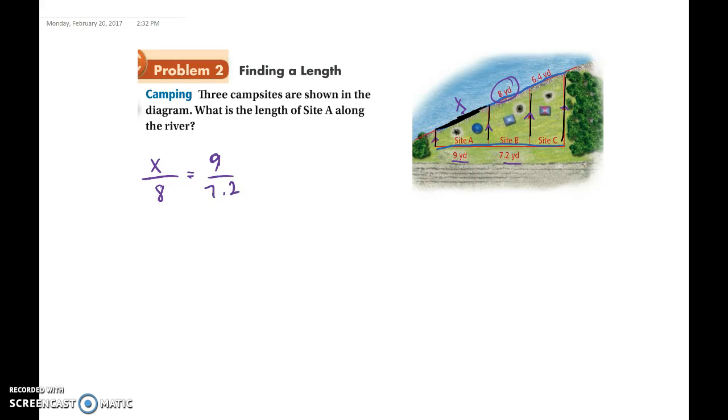And now we created our proportion. There are different ways that you could have done this as long as you stayed consistent. And then we cross multiply. So then we would get X times 7.2 is equal to 8 times 9.